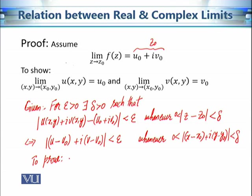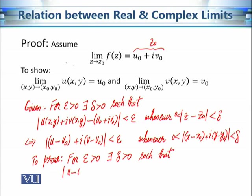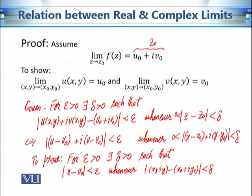That means for epsilon greater than 0, we want to find delta greater than 0 such that |u − u₀| is less than epsilon, whenever the distance between (x + iy) and (x₀ + iy₀) is less than delta and greater than 0. That is the statement we want to show.